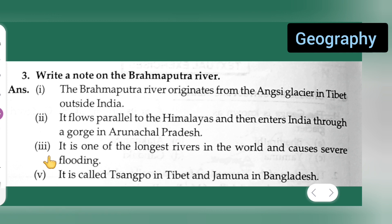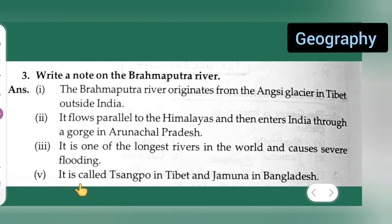Third point: it is one of the longest rivers in the world and causes severe flooding. Fourth point: it is called the Sumpo in Tibet and Jamuna in Bangladesh.